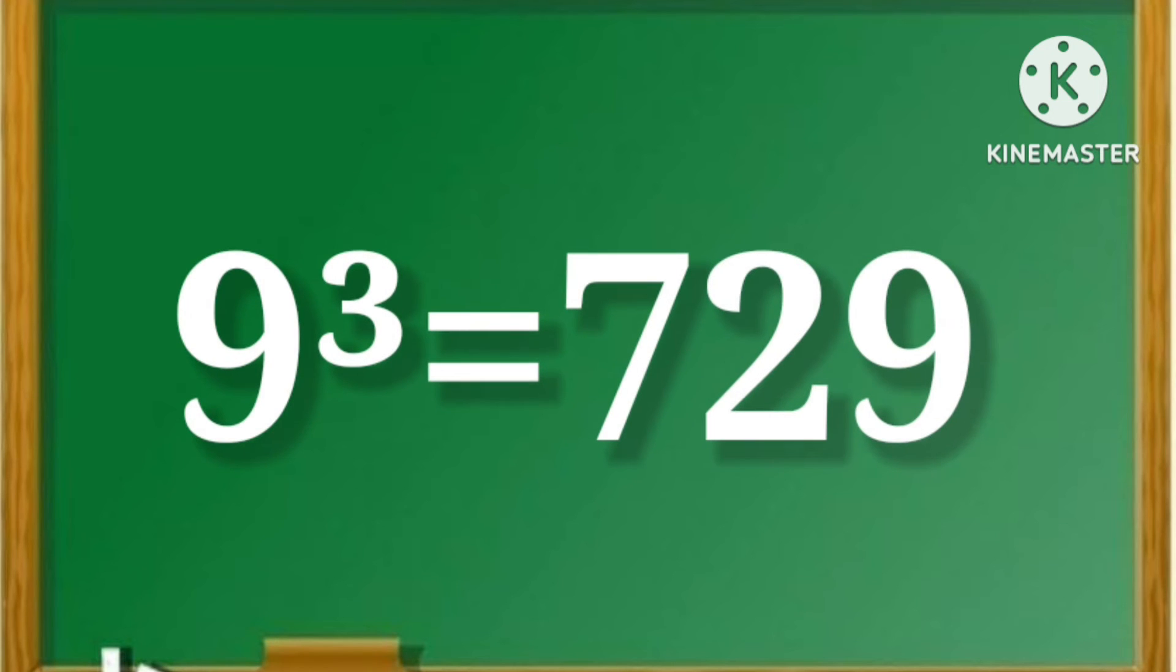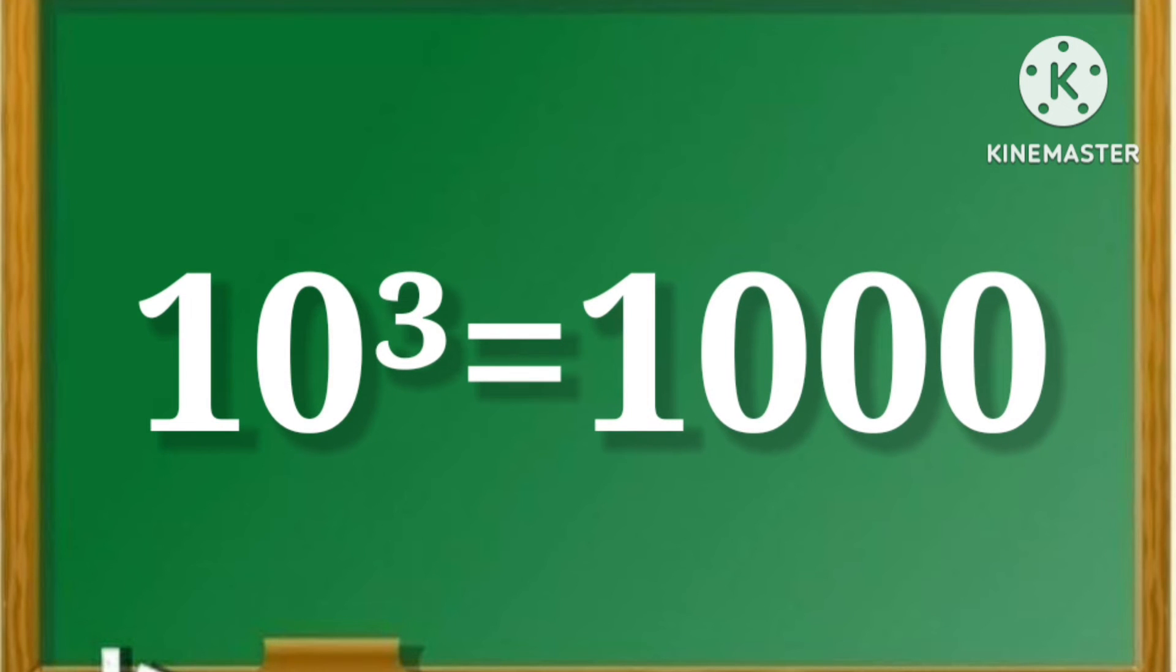9 cube is equal to 729. 10 cube is equal to 1000.